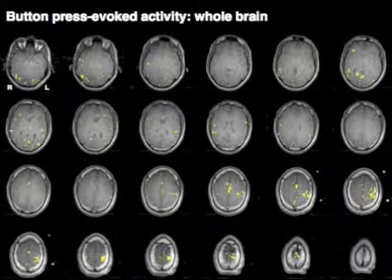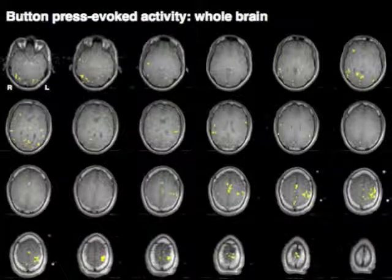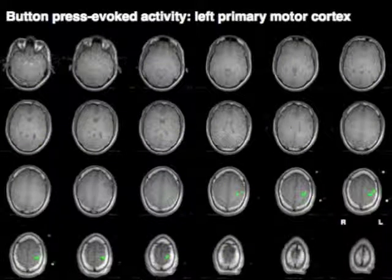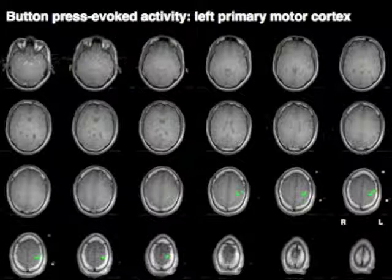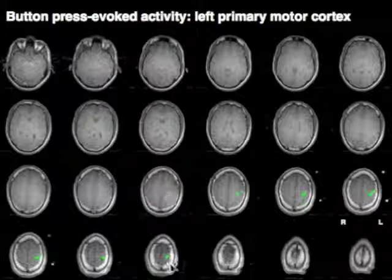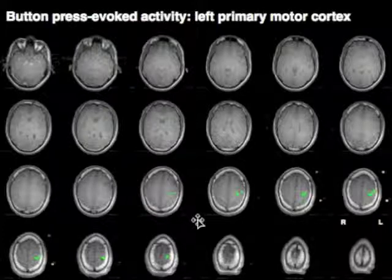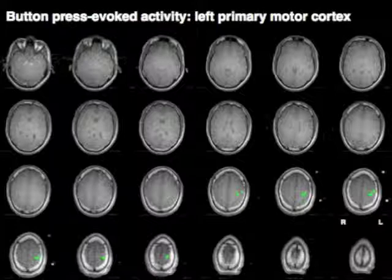and so what we're going to do first is mask out activity from regions that we don't think are directly involved in the behavior that we are measuring and when we do that now what I'm showing you is a region of interest that's restricted to the left hemisphere in the pre and post central gyri and so these voxels that are now depicted in green are the voxels in the left hemisphere sensory motor cortex that show elevated activity that is time-locked with the behavior that subjects were performing.